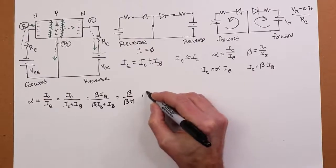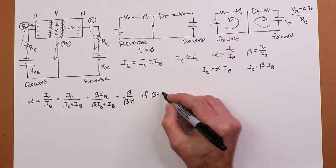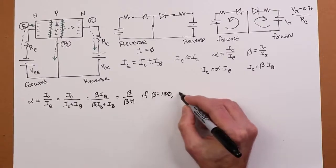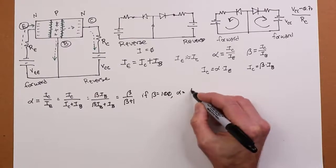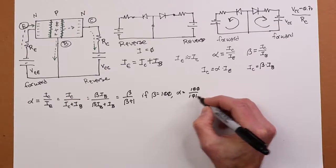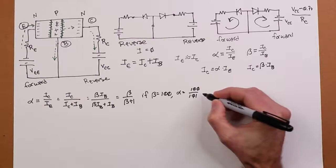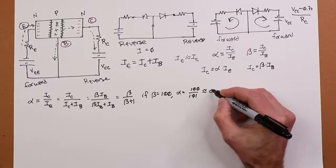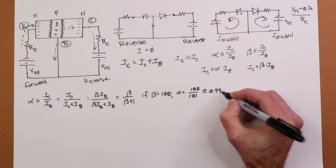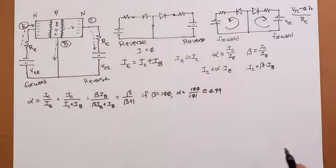So if your beta was 100, right, then your alpha is 100 over 101. In other words, just a shy bit over 0.99, right? 99% of the injected electrons are going to wind up in the collector.